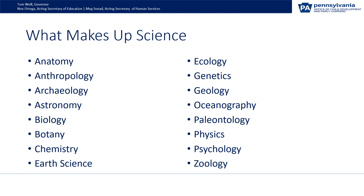There are many different branches of science included under science as the overall topic — things like anatomy, anthropology, archaeology, astronomy, biology, botany, chemistry, earth science, ecology, genetics, geology, oceanography, paleontology, physics, psychology, and zoology, just to name a few.